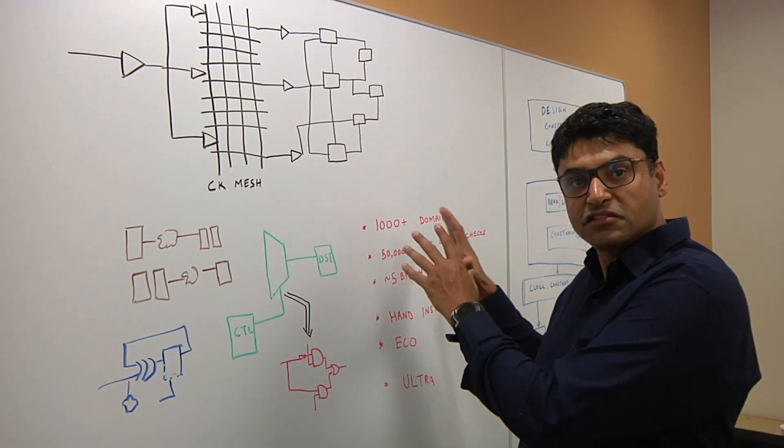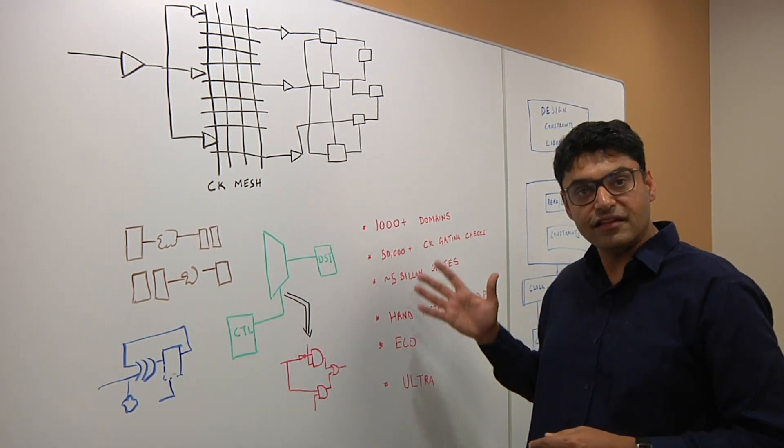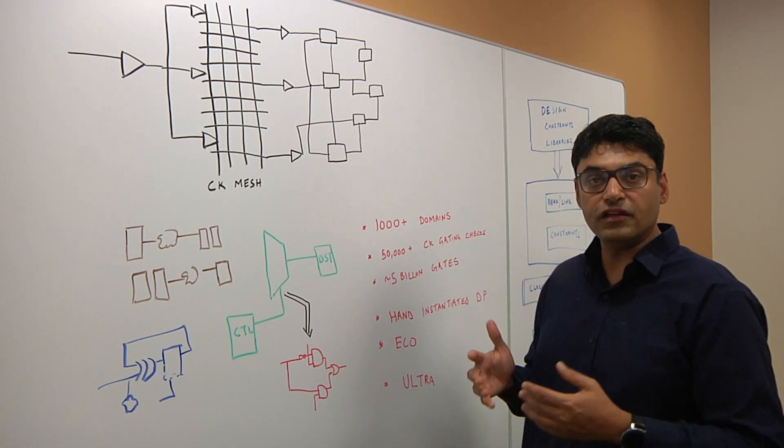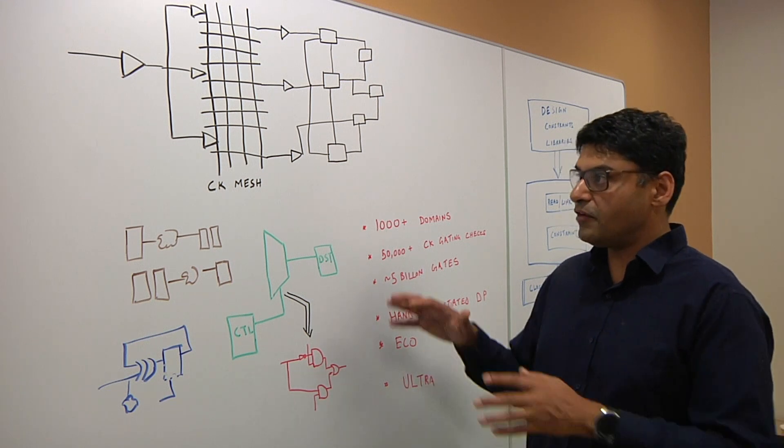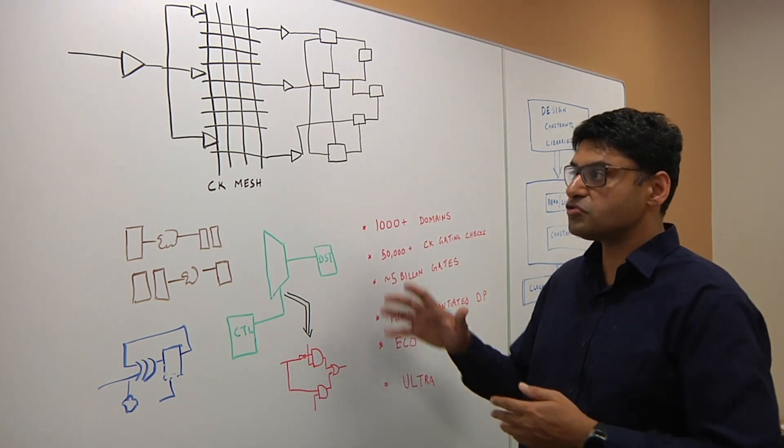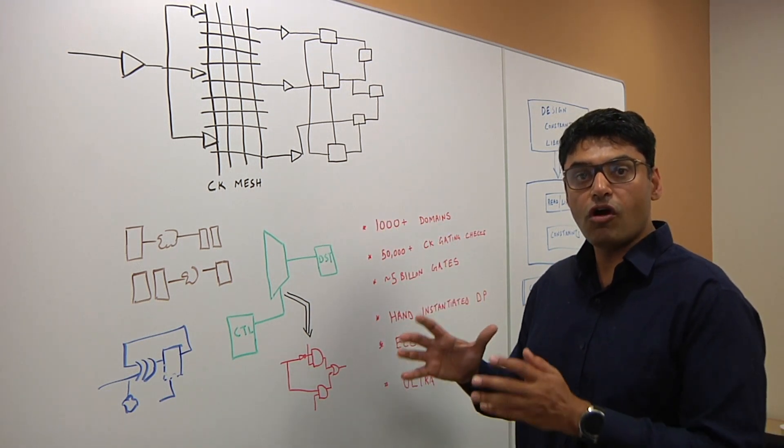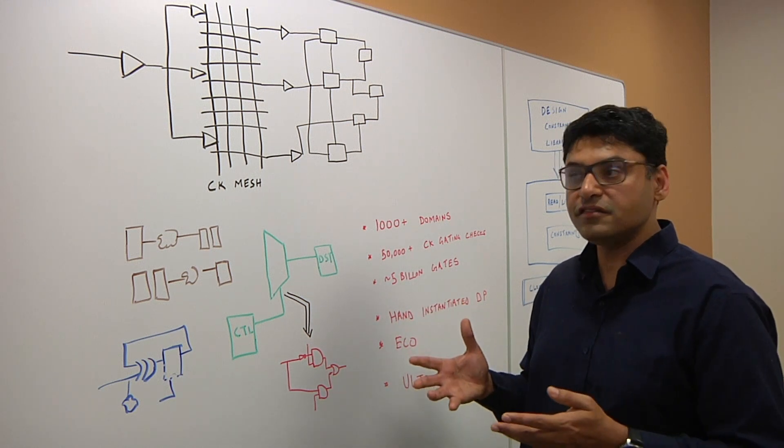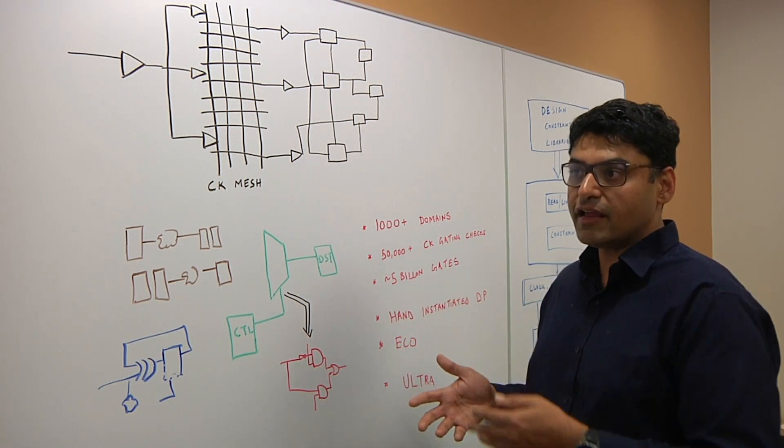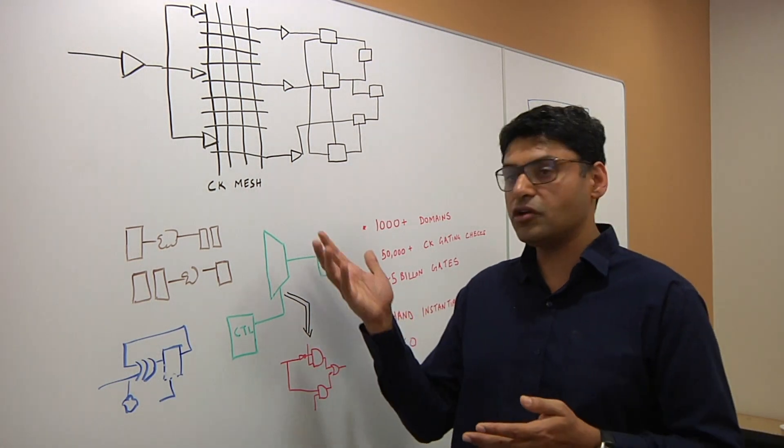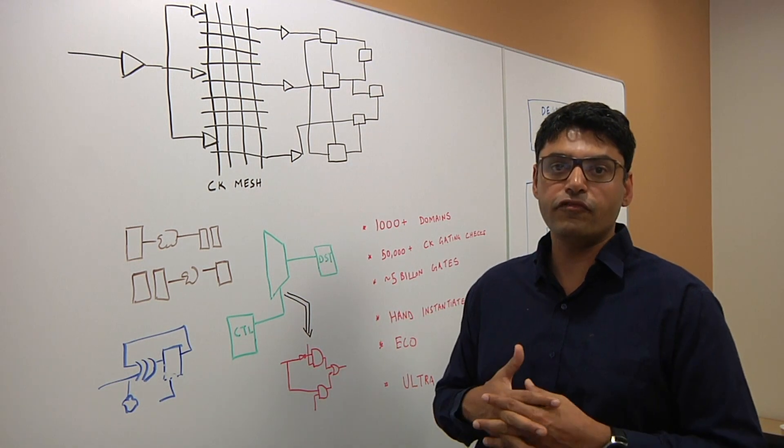So this much complexity due to the increasing size of the design, the increasing complexity of the library, how closely the circuits are packed together. And when you combine all these features, there are so many points of failures of your CDC verification at the netlist, that if you're leaving netlist CDC verification to chance, just relying on your methodology and just relying on your RTL, you're setting yourself up for failure.